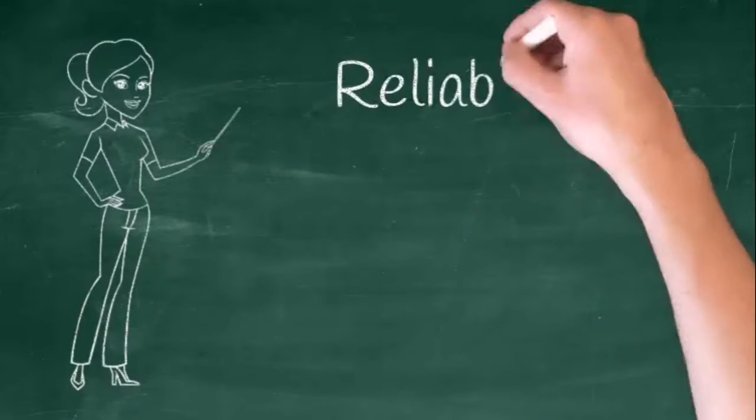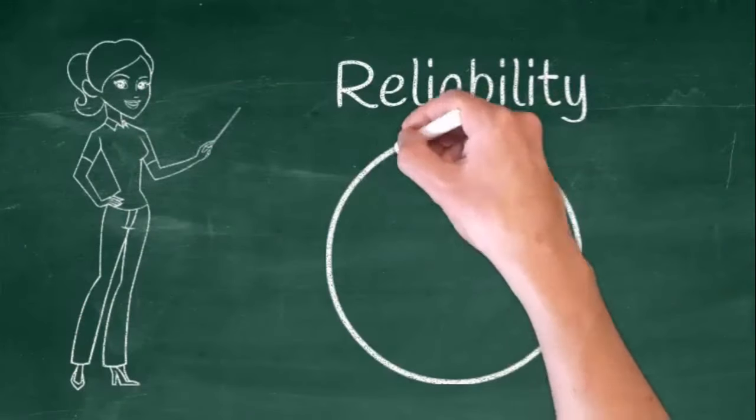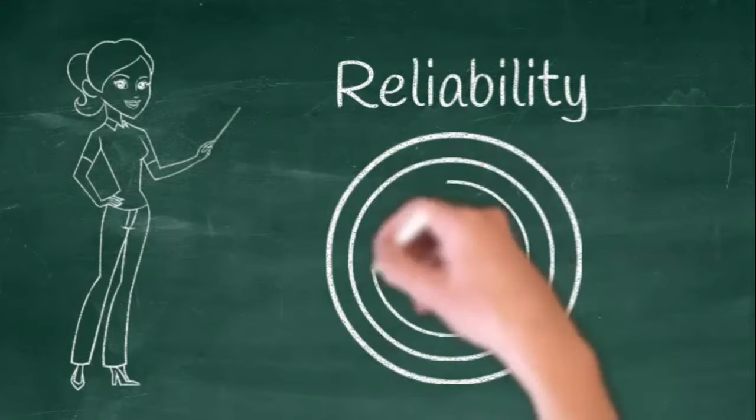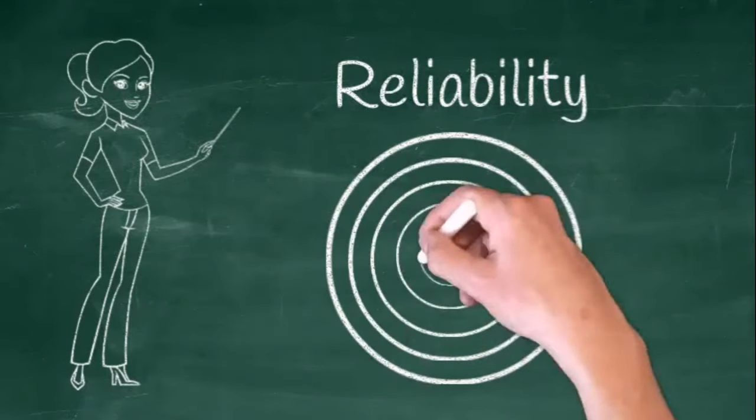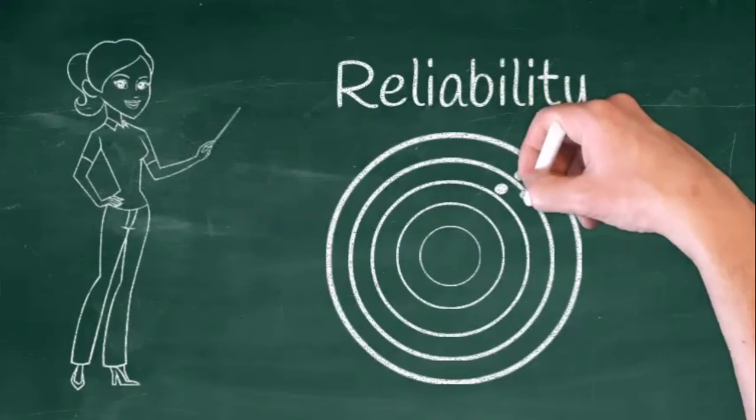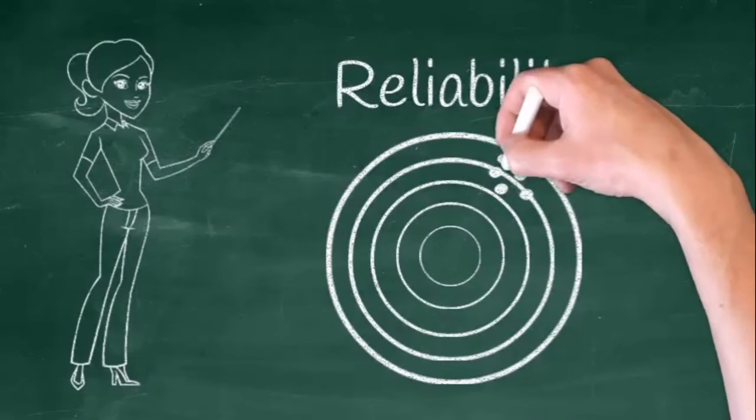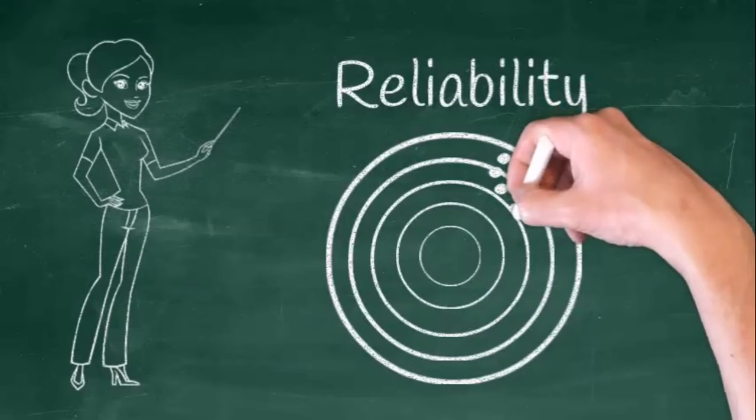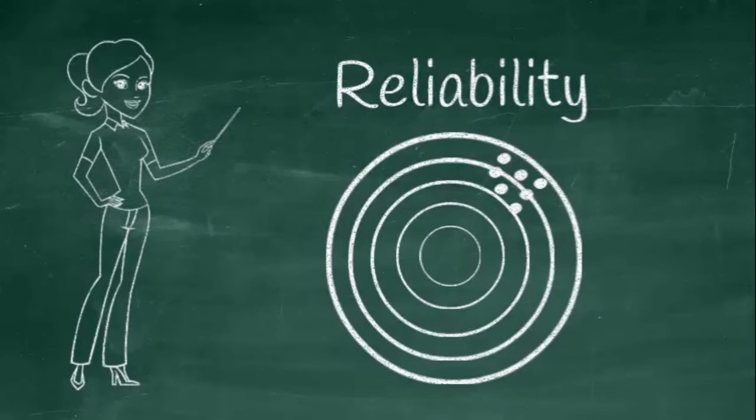Reliability refers to how consistently a method measures something. If the same result can be consistently achieved by using the same methods under the same circumstances, the measurement is considered reliable. A method is reliable if the same result is gathered despite many repetitions of testing.